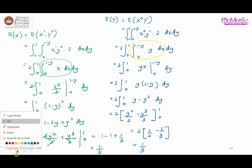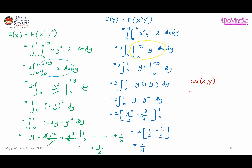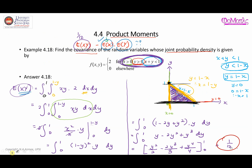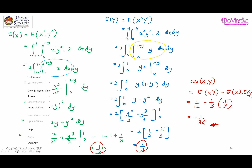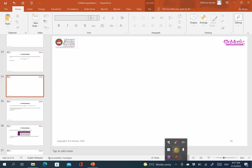We now have everything needed to find the covariance of X and Y. Cov(X,Y) = E[XY] minus E[X] times E[Y] = 1/12 minus (1/3)(1/3) = 1/12 minus 1/9 = negative 1/36. That's all for now — thank you very much for watching and I'll see you in the next video.